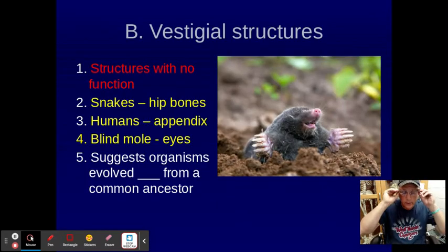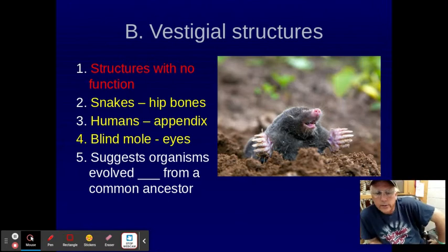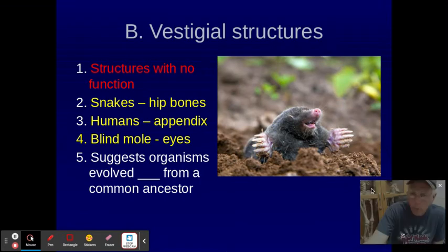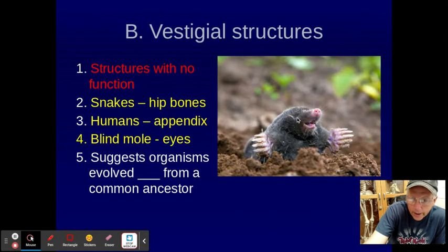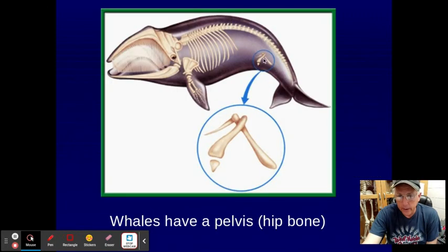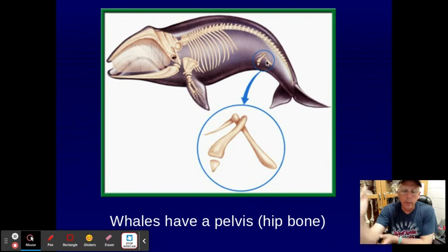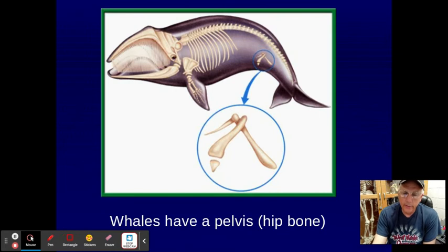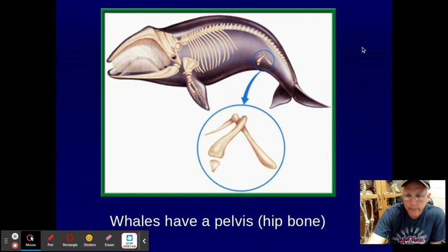Let's go a different direction — vestigial organs. These are structures that have no function now, but they're still there. Examples include hip bones in a snake and a whale, the appendix in a human, and the star-nose mole — he lives underground, has no eyes, but yet he has eye sockets where eyes used to be. What evolution tells you is: why do they still have those things? Why do we have an appendix if we don't use it anymore? Why does a whale have a hip bone? It's a remnant — left over from maybe their prehistoric days when they had legs. That's another strong evidence of evolution.